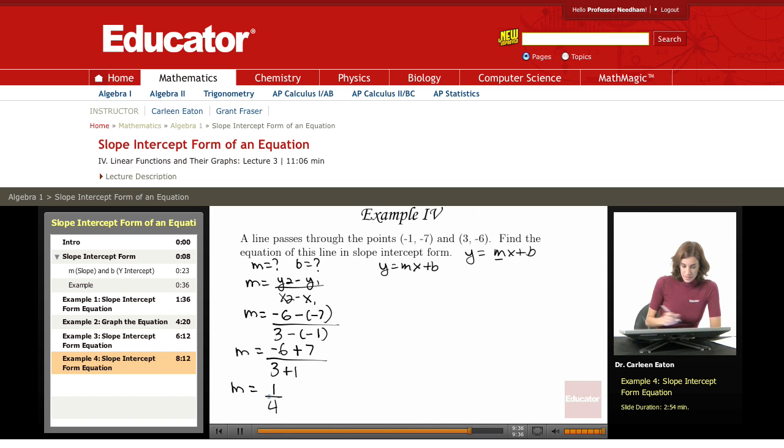And I know that m equals 1 fourth. I'm going to select a pair of points here. I'm going to use (-1, -7), and go ahead and insert those into the equation. So y is negative 7 equals 1 fourth times negative 1 plus b. This gives me negative 7 equals negative 1 fourth plus b.